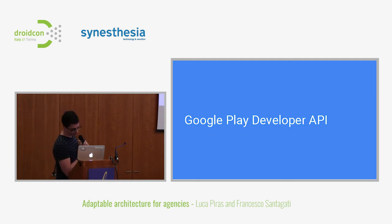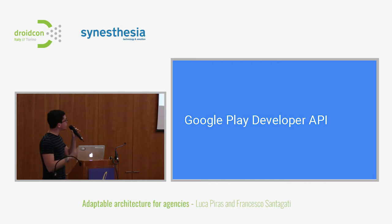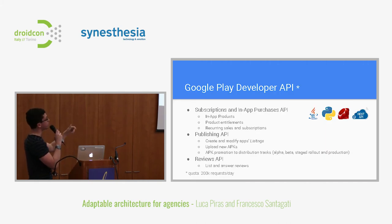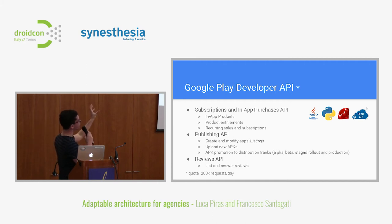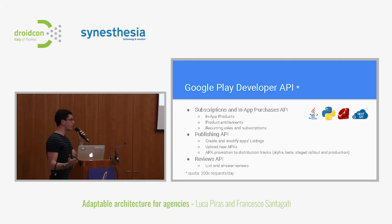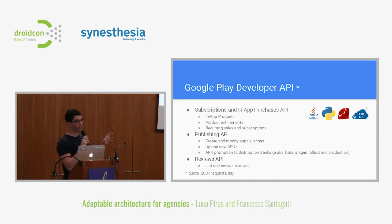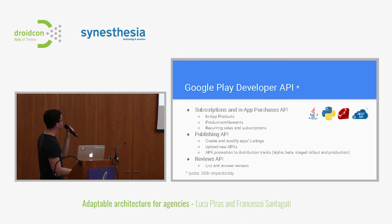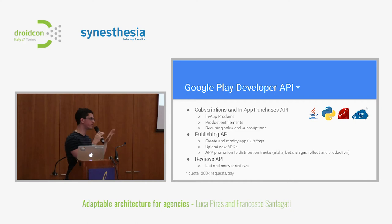So the Developer API — let's say you have your APK being built. How do you automate the last step and send it to the Google Play Store? This API is free, up to 200,000 requests per day. It's composed of three main groups of resources. The first is subscriptions and in-app purchases. If you're a game developer or have an app with in-app purchases and want to do a Christmas or Easter sale, you can control those via the publishing API's subscription and in-app purchases resources.